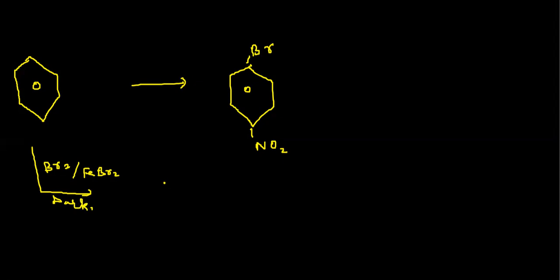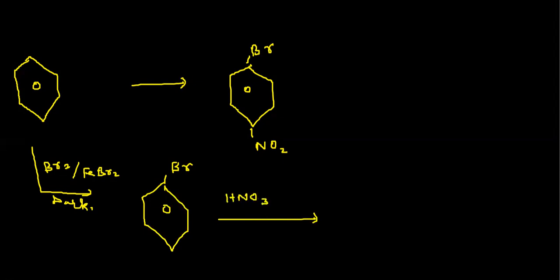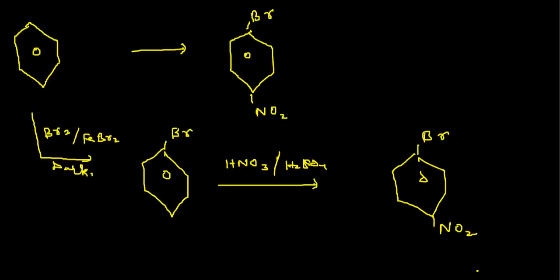So firstly we do bromination — FeBr₃ in the dark. Bromine group comes over the benzene ring giving bromobenzene. Now when you do nitration, bromine is ortho-para directing, so the nitro group comes at ortho and para positions. The nitro group comes at the para position — ortho is not required here. So remember: with bromination and nitration, we have to decide which process to conduct first. Bromination is conducted first so it can be ortho-para directing for the nitro group.